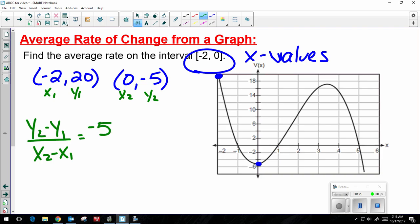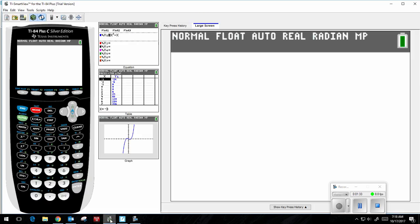So, negative 5 minus 20 over 0 minus negative 2. That's the setup. Then I'm going to go to my calculator.